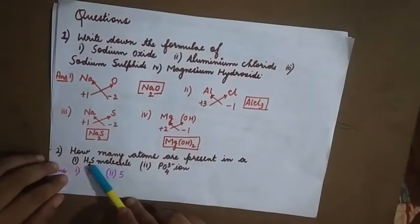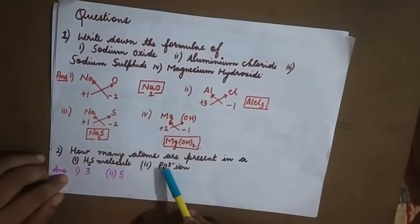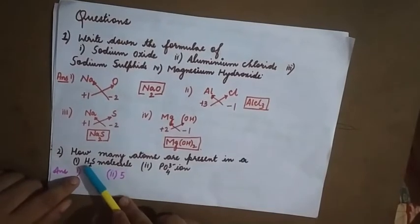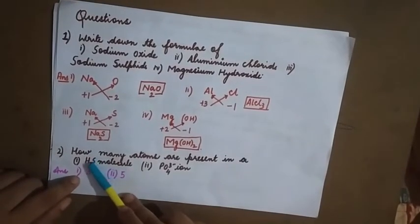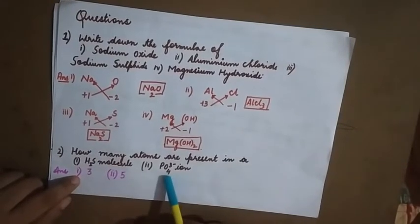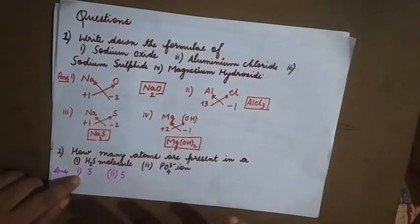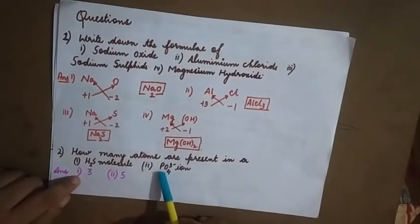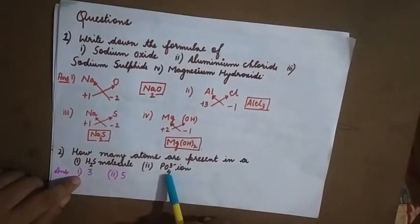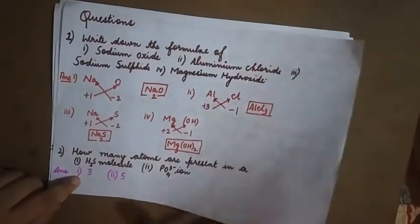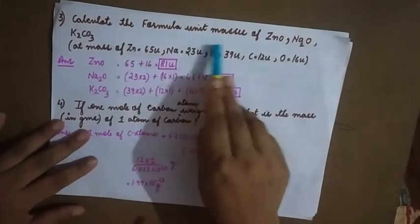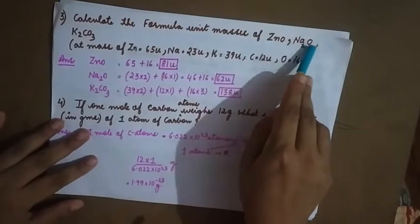Next question: how many atoms are present in H₂S molecule and PO₄³⁻ ion? For H₂S: hydrogen is 2 and sulfur is 1, so 2 + 1 = 3 atoms. For PO₄³⁻, ignore the charge — just count atoms: phosphorus is 1 and oxygen is 4, so 4 + 1 = 5 atoms.